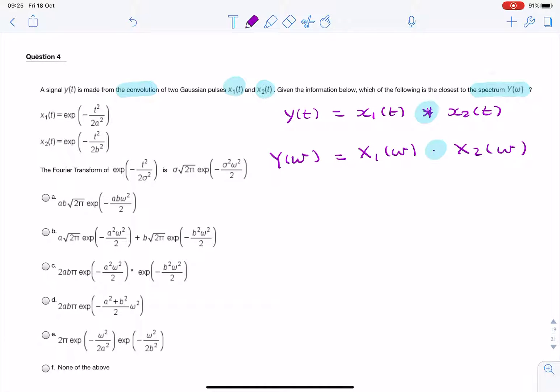So all we need to do now is to find x1 of omega and x2 of omega, and we're given this Fourier pair. So if we just replace a and b instead of sigma, then we have the two spectra, and we simply need to multiply them. So y of omega equals, we simply replace sigma with a. And then we have a multiplication instead of the convolution. And then the same again.